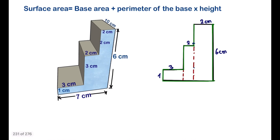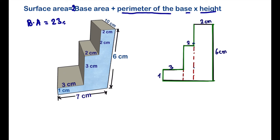For the surface area, we use this formula: surface area equals two times the base area plus the perimeter of the base times the height of the prism. We already calculated the base area as 23, so we do not need to calculate that again. Now we need to calculate the perimeter of the base.